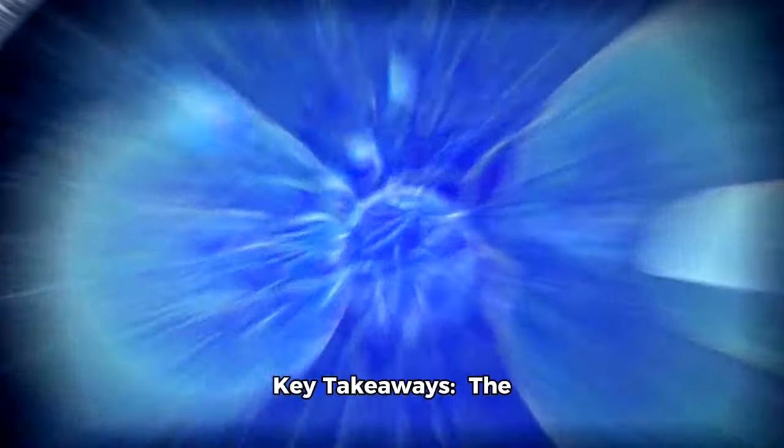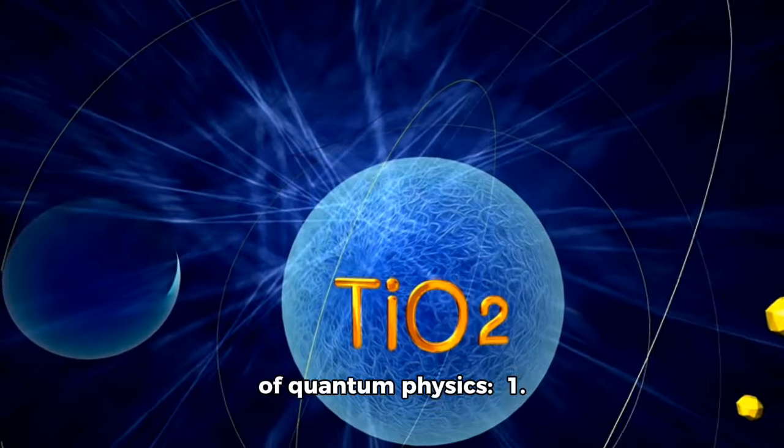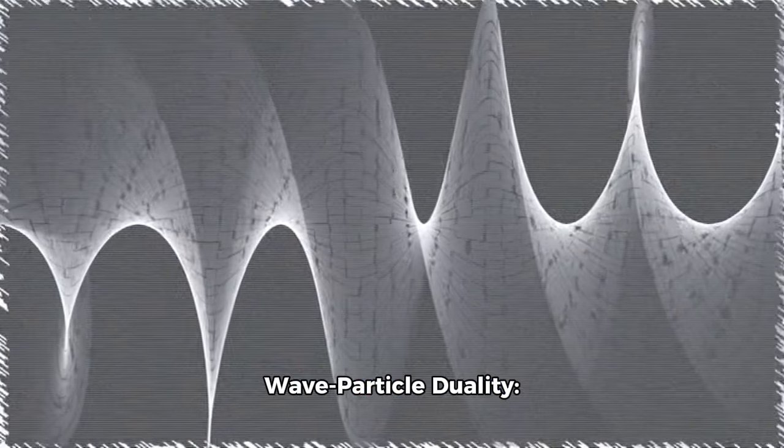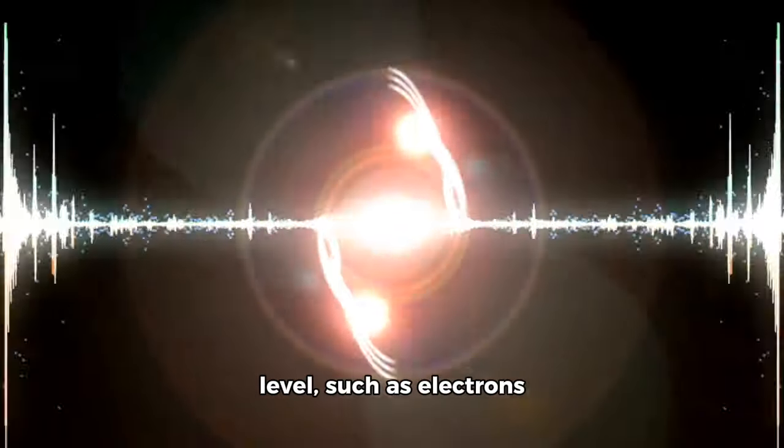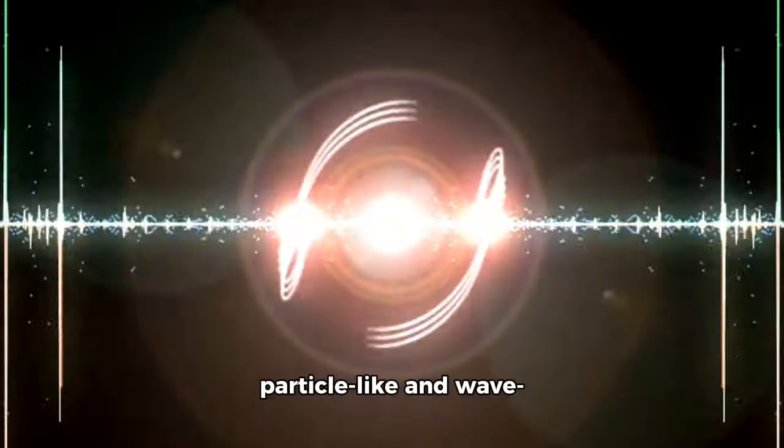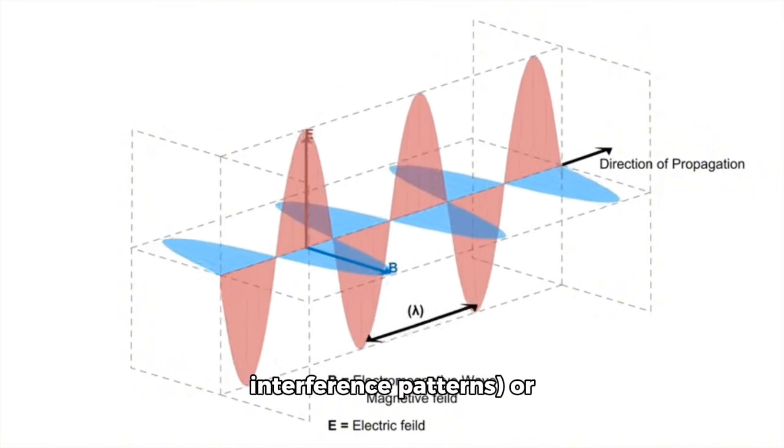Key takeaways: The double-slit experiment demonstrates several fundamental principles of quantum physics. Wave-particle duality: Particles at the quantum level, such as electrons and photons, exhibit both particle-like and wave-like behavior. They can behave as if they are waves creating interference patterns, or as if they are discrete particles when their path is observed.